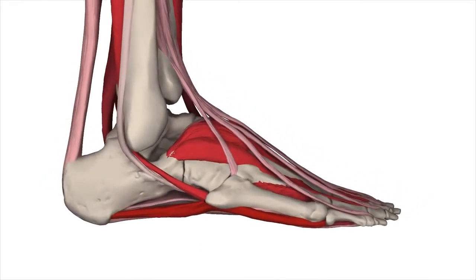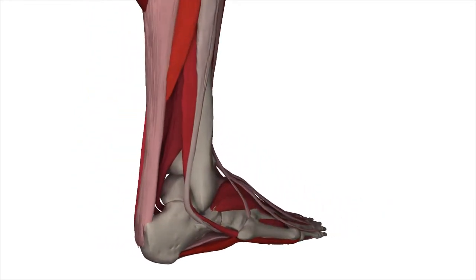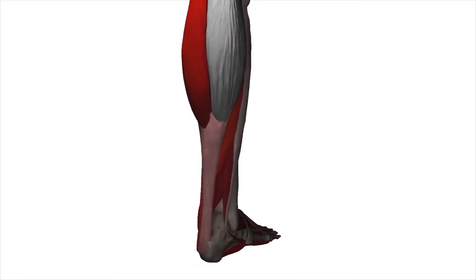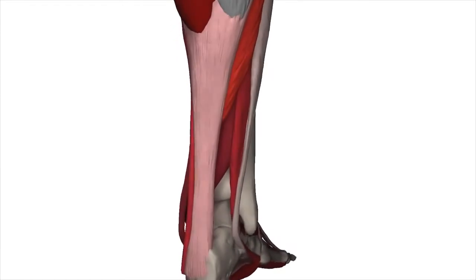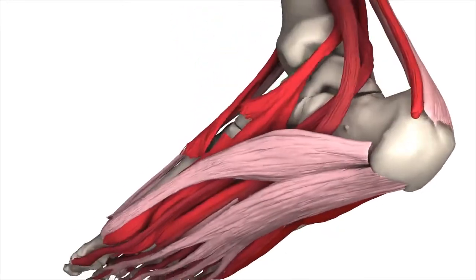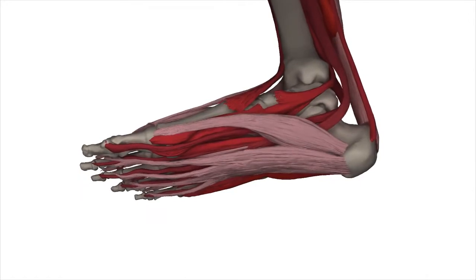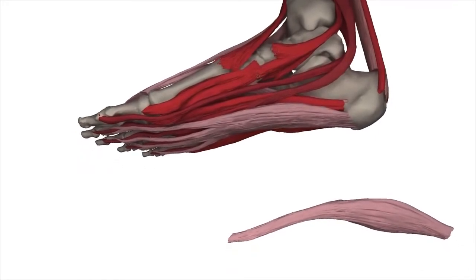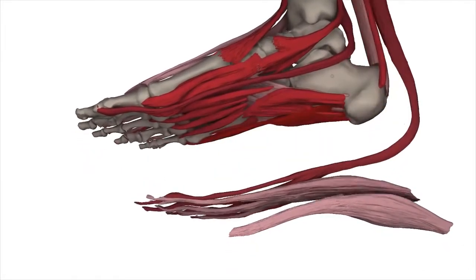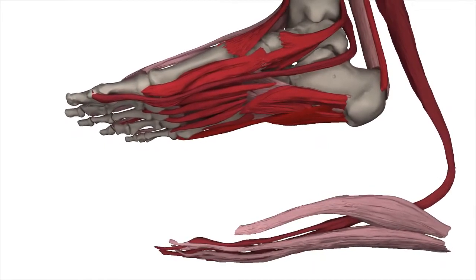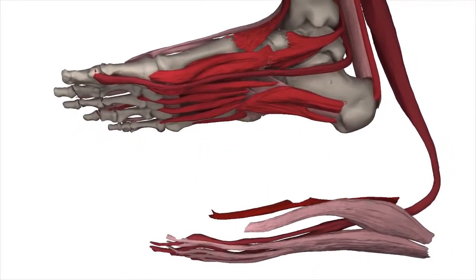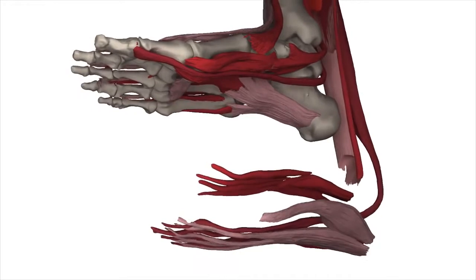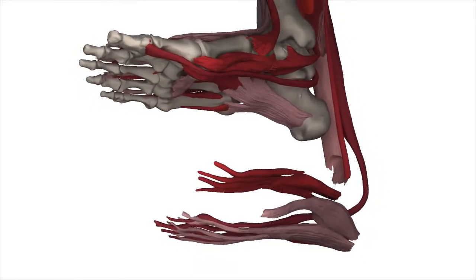The muscles of the foot are responsible for foot shape, strength, and support. Extrinsic muscles control the movements of the foot; they arise in the lower leg and extend into the foot as tendons. Intrinsic muscles maintain foot shape and support. There are four layers on the plantar surface and one layer on the dorsal surface. The first layer includes the abductor hallucis, which abducts the first phalanges of the big toe; the flexor digitorum brevis, which flexes the second phalanges of the four smaller toes; and the abductor digiti minimi, which abducts the small toe. The second layer includes the quadratus plantae, which flexes the distal end of the phalanges of the smaller toes.